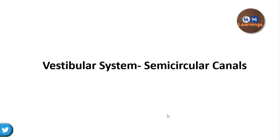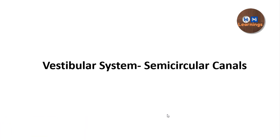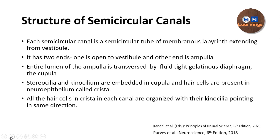In part one, we discussed about the otolith organs — that is the utricle and the saccule. In this video, we are going to discuss about the structure of the semicircular canal, the function of the semicircular canal, and how exactly the brain comes to know that the head is moving by the help of the semicircular canal.